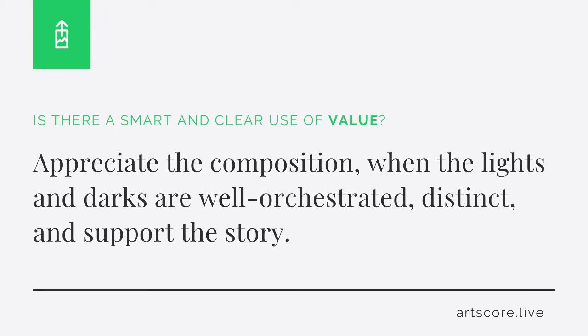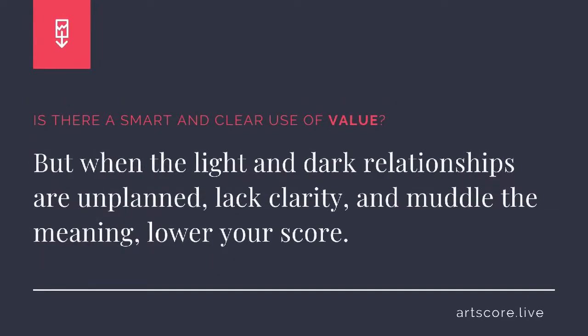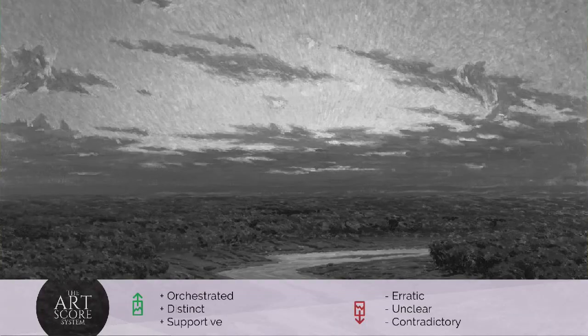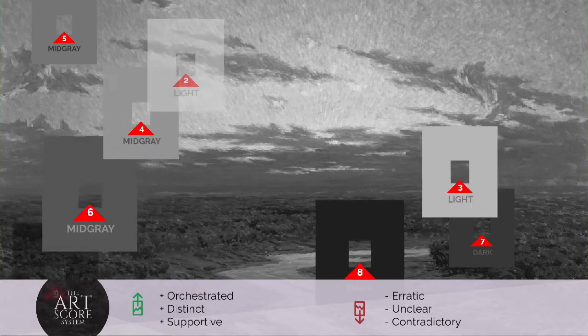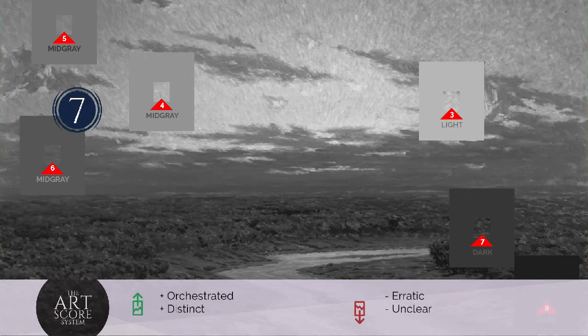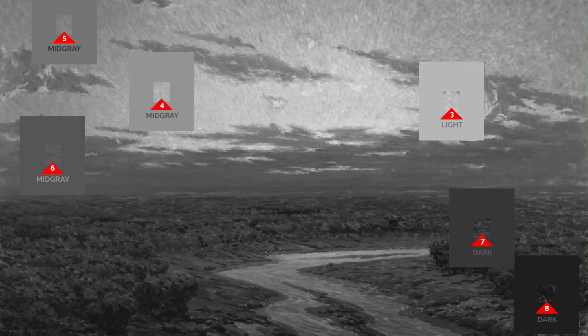Value. Is there a smart and clear use of value? Appreciate the composition when the lights and darks are well orchestrated, distinct, and support the story. But when the light and dark relationships are unplanned, lack clarity, and muddle the meaning, lower your score. I scored the artwork a 7. I see the values support the subject and remain clear when squinting your eyes.